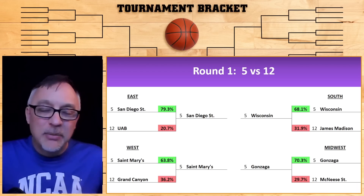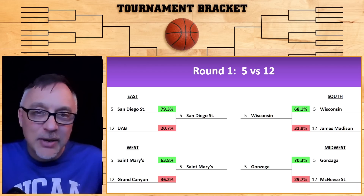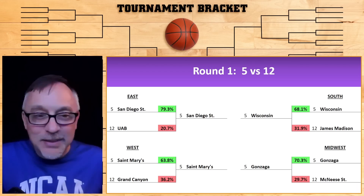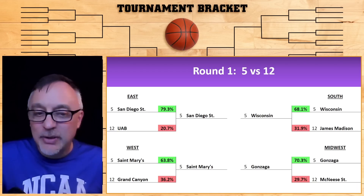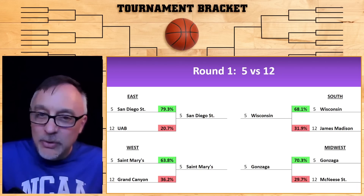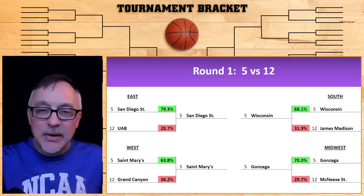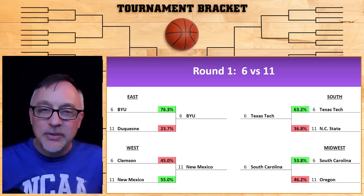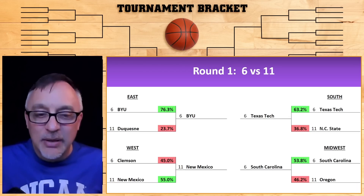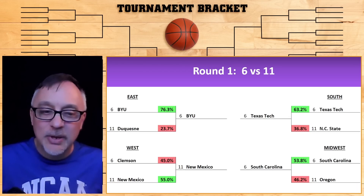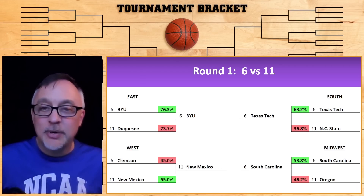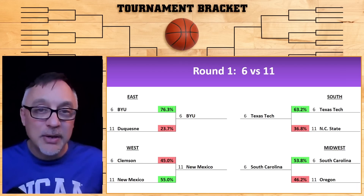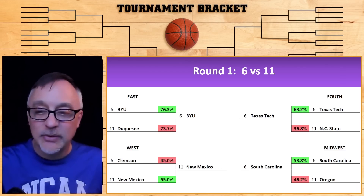Now, we might think there'll be a 12 seed upset over a five — well, not this year. The closest one we have is St. Mary's against Grand Canyon, but they're still at 63.8%, so we're going to go ahead and go with St. Mary's. Here I think is the first time we see an upset: six versus 11. New Mexico, down in the bottom left of the West region, is 55% to 45% to win against Clemson. So KenPom predicts one upset here — an 11 seed over a six.